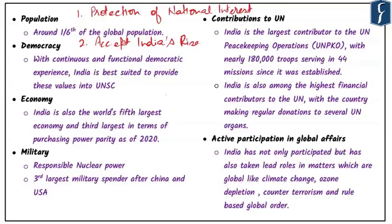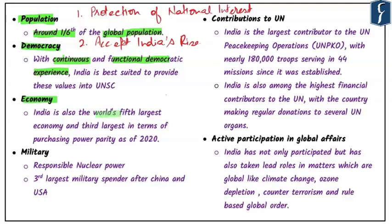India has played a key role in the UNSC's objective of international peace and security. India's population is going to touch 1.4 billion soon, representing one-sixth of humanity. India has a unique distinction of continuous and functional democratic experience. India is also the world's fifth largest economy and third largest in terms of purchasing power parity as of 2020. India is a responsible nuclear power, and its military expenditure is the third largest in the world after China and USA.